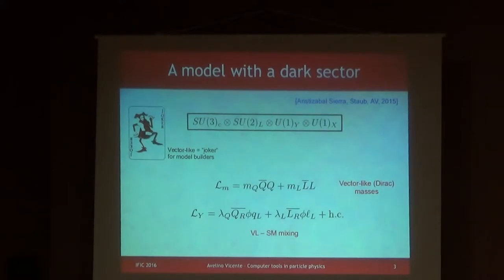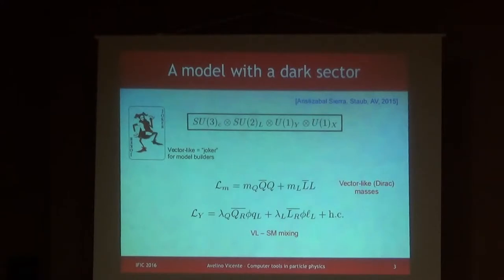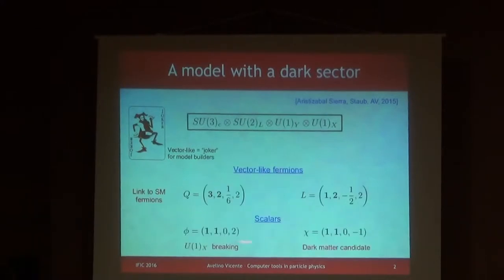There are additional Lagrangian terms. Since these fermions are vector-like, meaning that left-handed and right-handed parts have exactly the same representation under the gauge group, you are allowed to write down mass terms in the Lagrangian which are gauge invariant. In addition, because of this charge plus 2, you can form invariants that couple these fermions with the standard model fermions and the additional scalars.